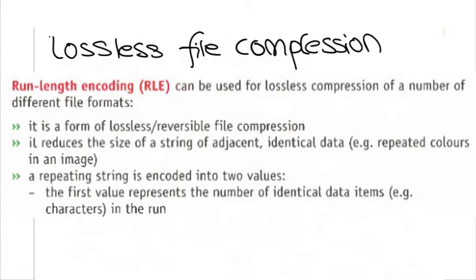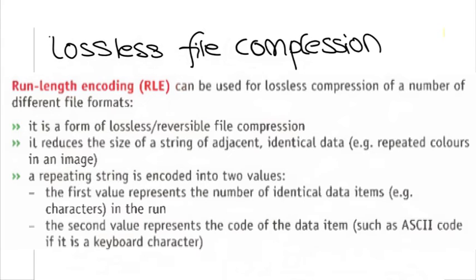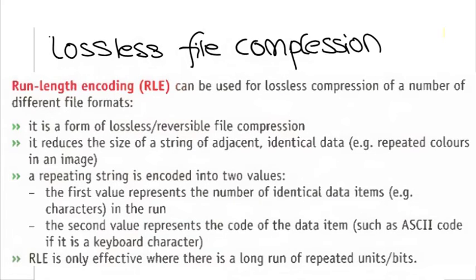The first value represents the number of identical data items, for example, characters in the run. The second value represents the code of the data item, such as ASCII code, if it is a keyboard character. RLE is only effective where there is a long run of repeated units or bits.